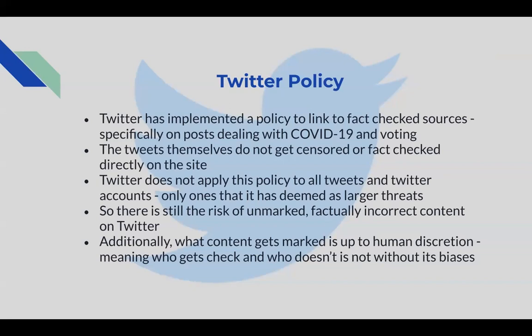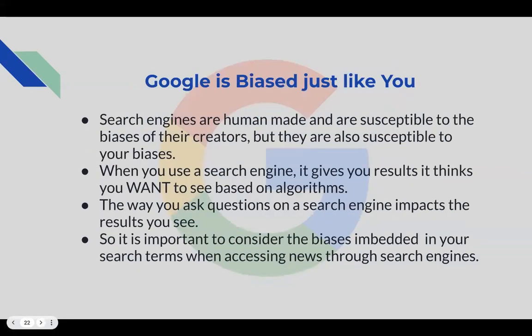Additionally, the content that gets marked is up to human discretion, meaning who gets checked and who does not can have biases. It's also important to realize that Google is biased — search engines were created by humans and are therefore susceptible to the biases of their creators and users. When you use a search engine, it gives you results it thinks you want to see based on behind-the-scenes algorithms. The way you ask questions on a search engine will impact the results you see, so consider any biases embedded in your search terms.